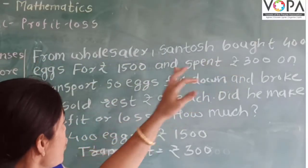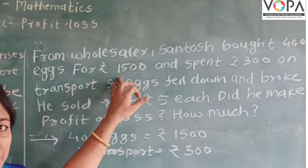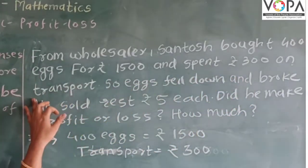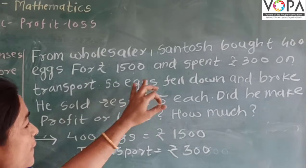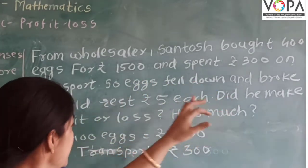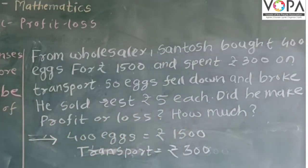From the wholesaler, Santos bought 400 eggs for Rs.1500 and spent Rs.300 on transport. As 50 eggs fell down and broke, he sold rest at Rs.5 each. Did he make profit or loss and how much?